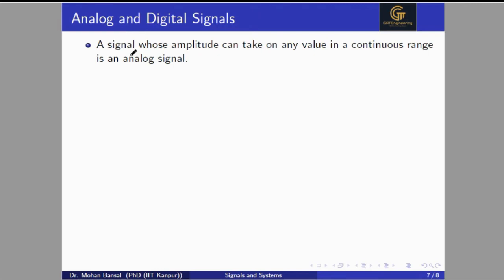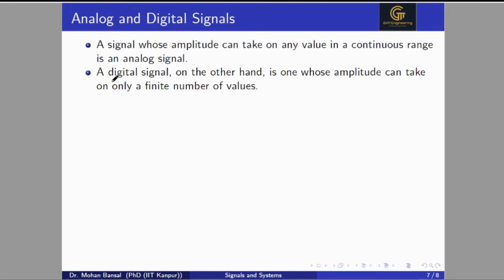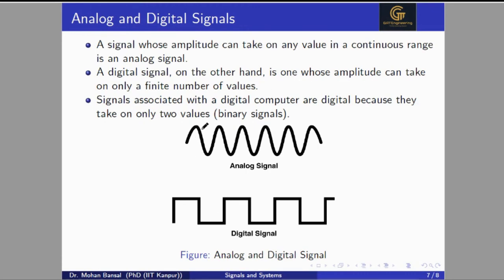Now we talk about analog and digital signals. For continuous and discrete signals we discussed the time axis or x-axis. For analog and digital signals we talk about the y-axis, or amplitude level. A signal whose amplitude can take any value in a continuous range is an analog signal — if the amplitude axis is continuous, the signal is analog. On the other hand, a digital signal has its amplitude level discretized at certain intervals. In a digital signal we get only two possible values: one and zero.